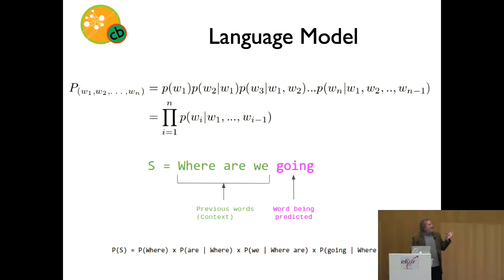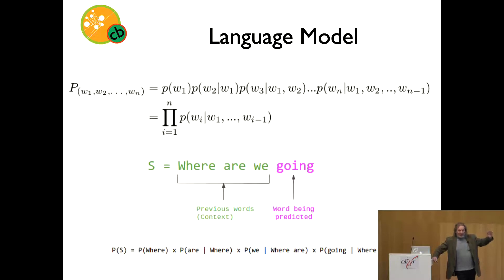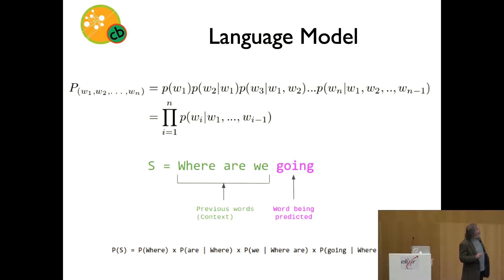Trying to do this statistically in the standard way — calculating all word probabilities and their pairwise and triple dependencies — gets intractable quickly. With 50,000 words in the language, there are 50,000 squared pairs, and it gets very hard at three words or more. So we approximate using only the previous three or so words. But when we apply machine learning to this, we can do much better — just needing raw text to train a neural network to predict the next word given previous words.